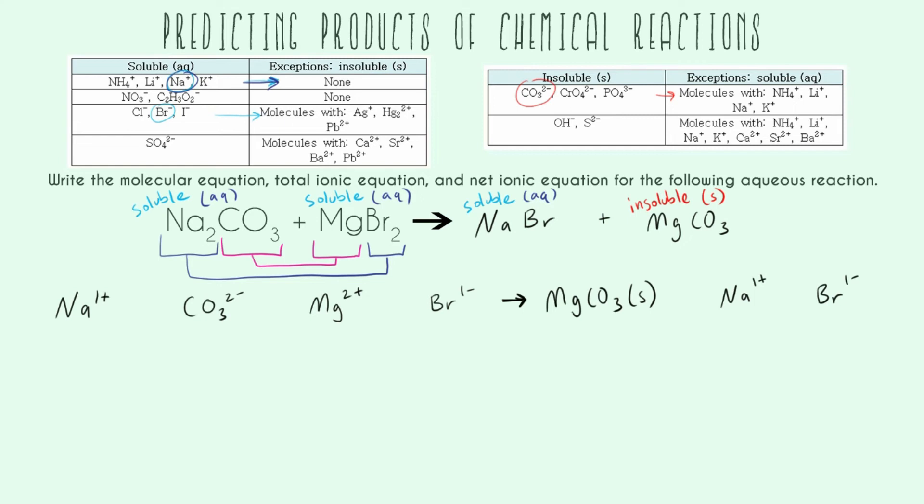So now since we kind of have the bones of our total ionic equation, let's just dot all of our I's and cross all of our T's. These things can kind of be annoying to look at. So first, we want to add our little pluses. And now we want to go ahead and add solid or aqueous. We already added our only solid. Everything else is going to be aqueous.